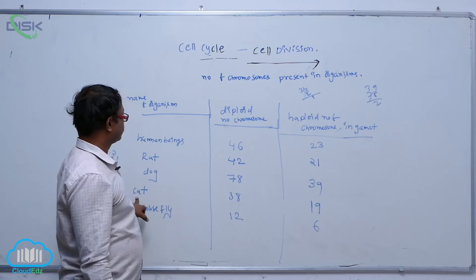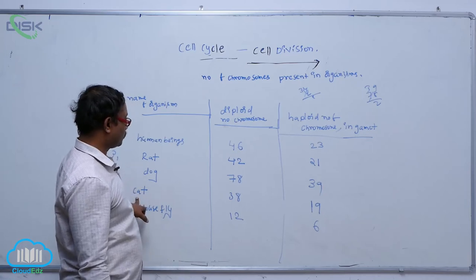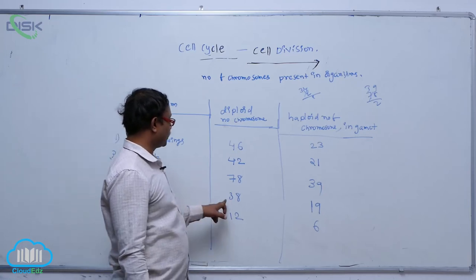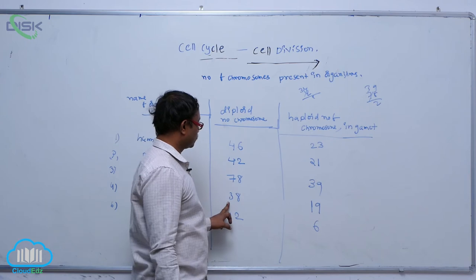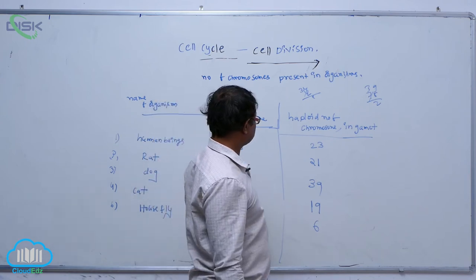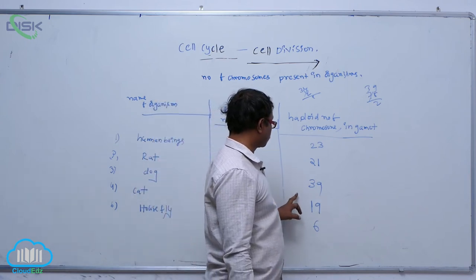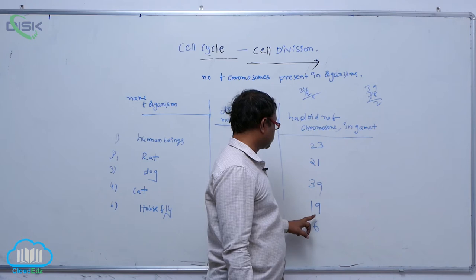In the cat, the diploid number of chromosomes is 38. After meiosis, the haploid number of chromosomes in the gamete is 19.